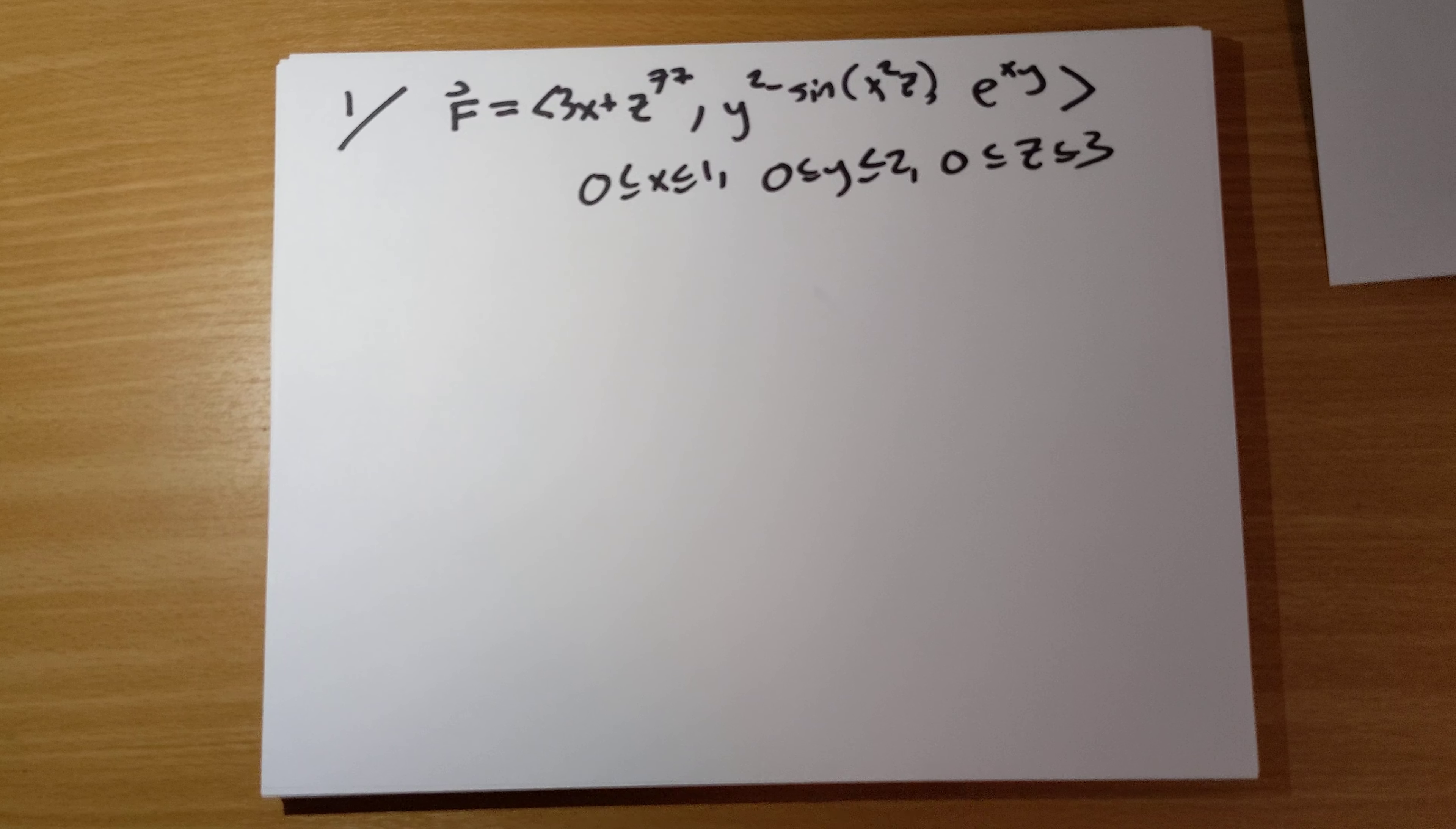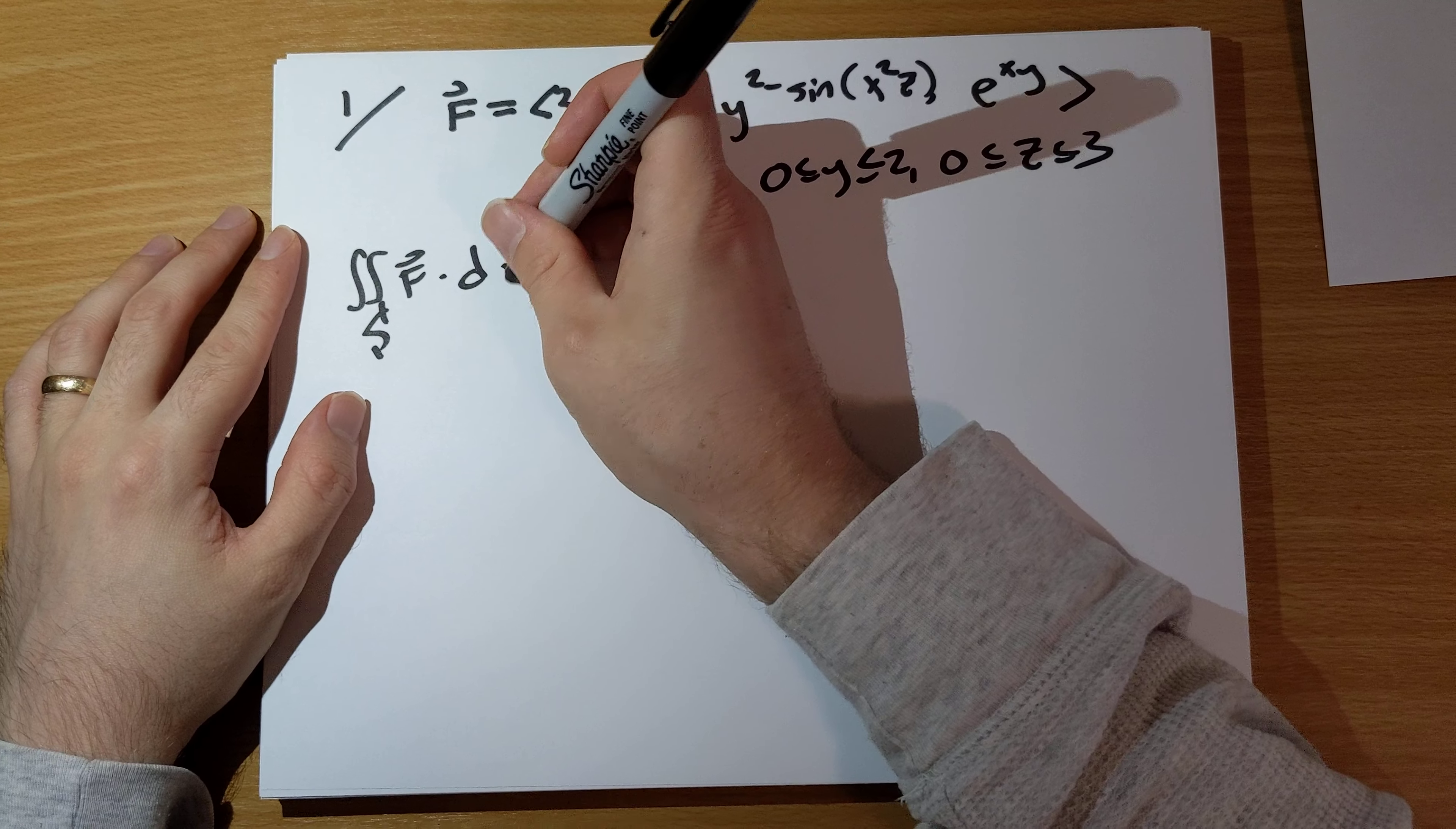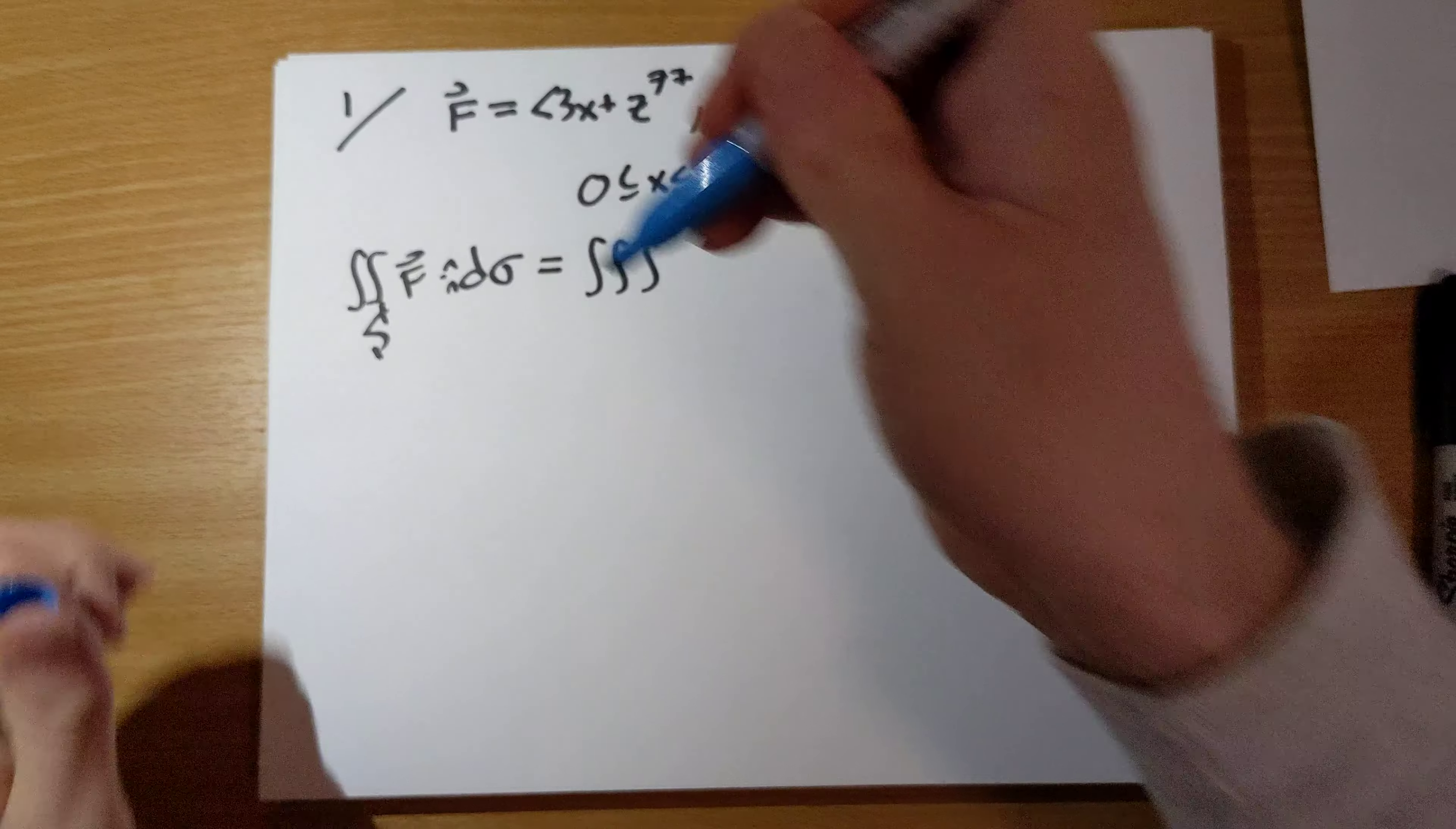How are we going to do that with the divergence theorem? The double integral over the boundary of the box of f dot d sigma, f dot n I should say d sigma, is going to equal the triple integral of the divergence here. How do we find the divergence?